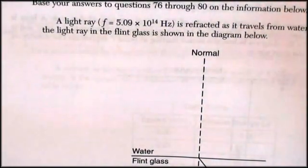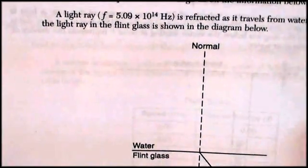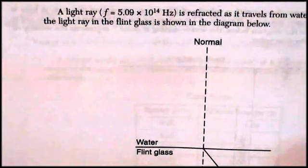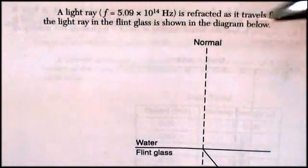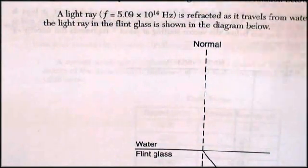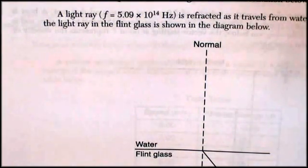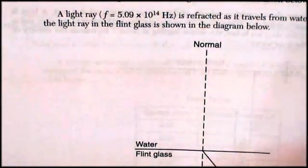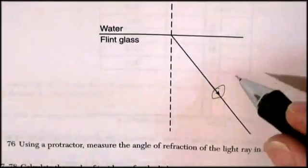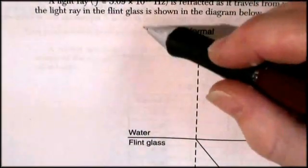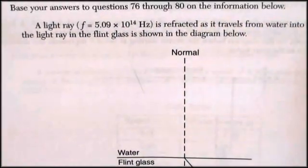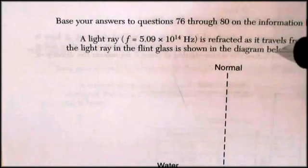It changes, and that causes dispersion and rainbows in a prism. Different colors of light have different indexes of refraction, so they have to give you what particular color. So anyway, it's refracted, travels from water into flint glass. So this little arrow down here indicates that it's going from water into flint glass. The path of light ray in the flint glass is shown in the diagram below.